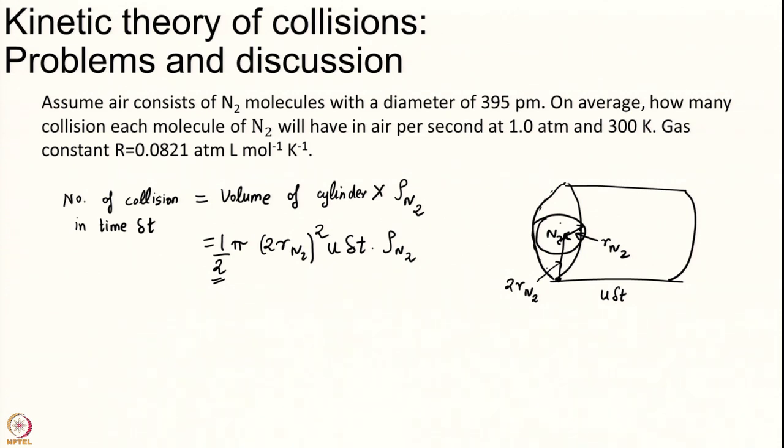Because I am double counting the collisions. The N2 this N2 let us me call just A arbitrarily. If it collides with another N2 which is B, well N2 B also collided with N2 A. So I have double counted the collision. That is why the factor of 2. Again we discussed this in some detail a few modules back. Please revise that if this is not clear.